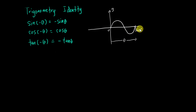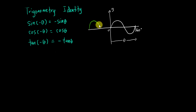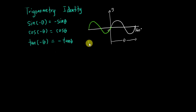What happens on the negative side — you can see the sine graph basically continues like this. From here to here, this region is the negative theta.